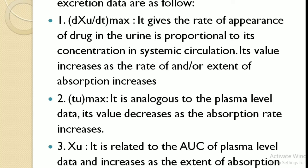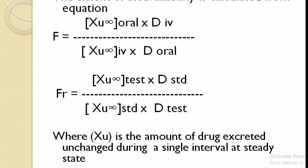Three parameters are used in urinary excretion studies. First, dXu/dt max — the rate of appearance of drug in the urine, which is proportional to its concentration in systemic circulation; its value increases as the rate or extent of absorption increases. Second, Tu max — analogous to plasma level data; its value decreases as the absorption rate increases. Third, Xu — related to AUC of the plasma level data and increases as the extent of absorption increases. A formula is available to determine bioavailability using the urinary excretion method.